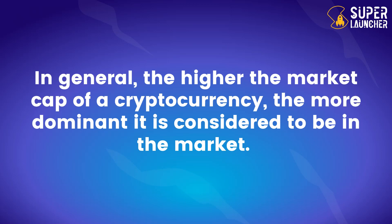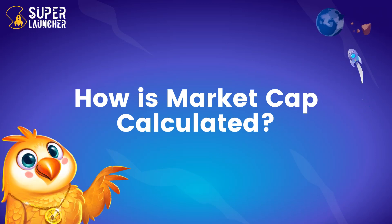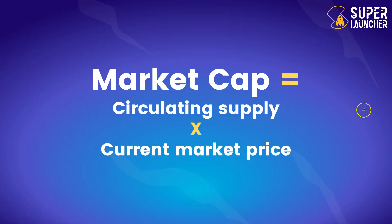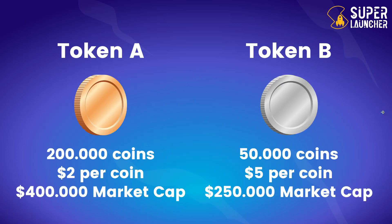The higher the market cap of a cryptocurrency, the more dominant it is considered to be in the market. So how is market cap calculated? Market cap equals the circulating supply — meaning the number of tokens in circulation — times the current market price. Consider Token A, which has 200,000 coins and a price of two dollars per coin. If you multiply 200,000 by two, you get the market cap.